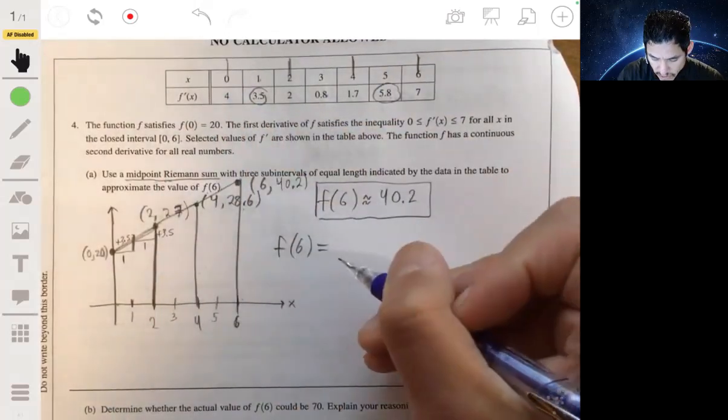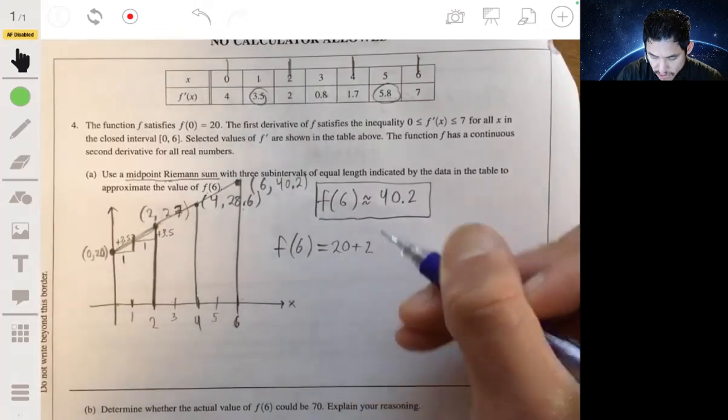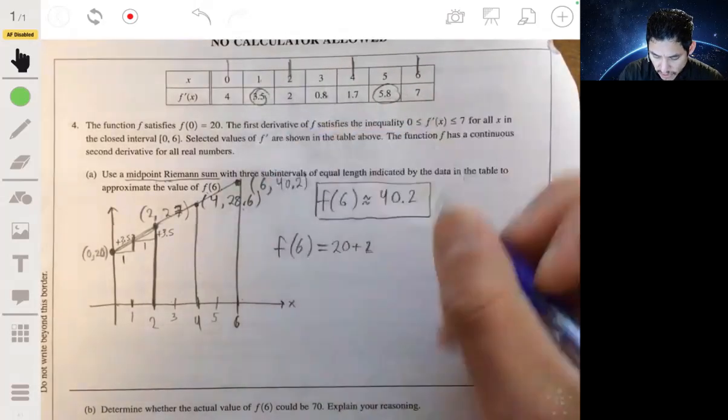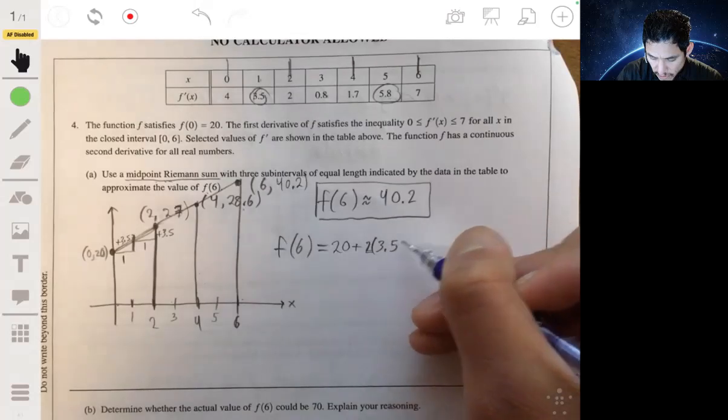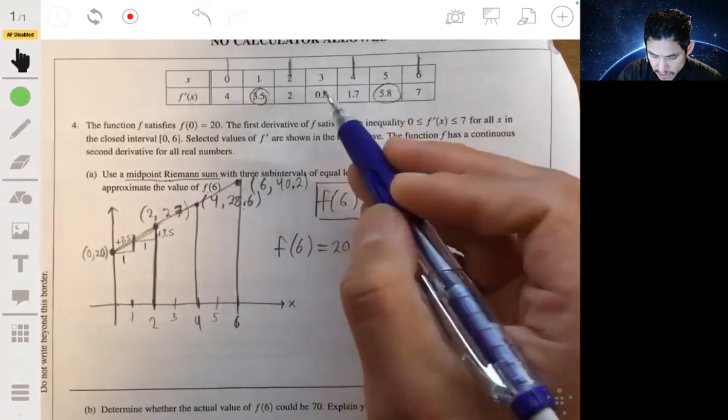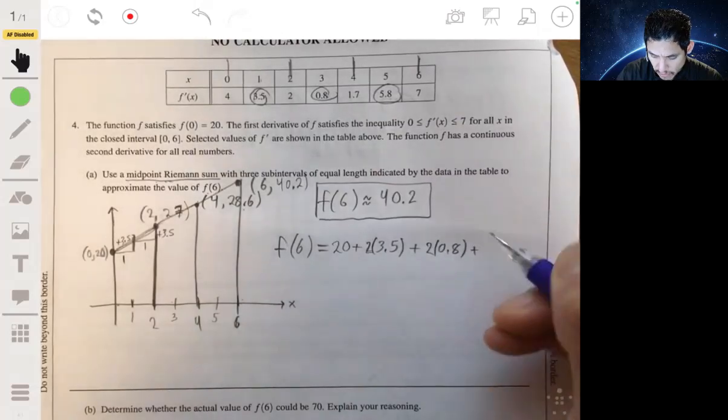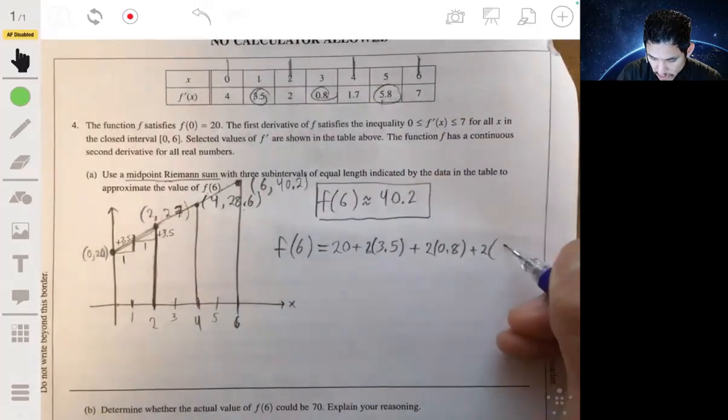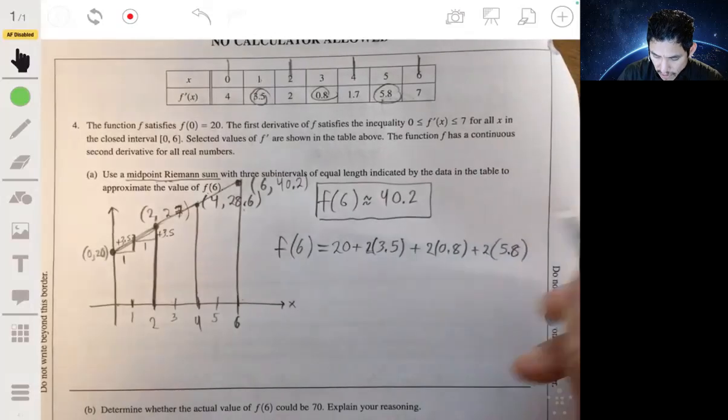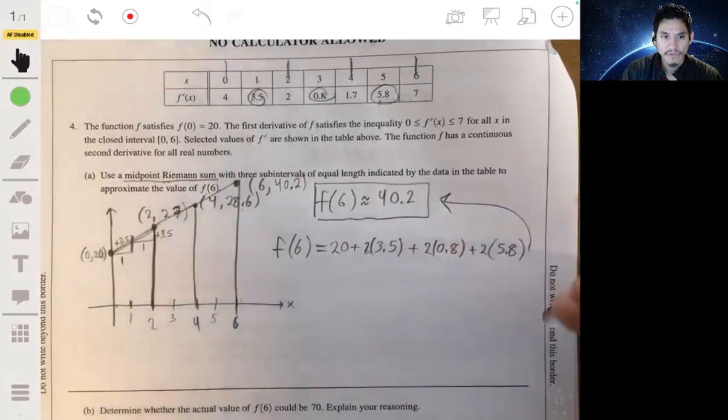20 plus 2 times 3.5, plus 2 times 0.8, and plus 2 times 5.8. And you're going to end up getting that 40.2.